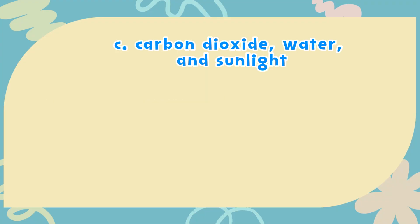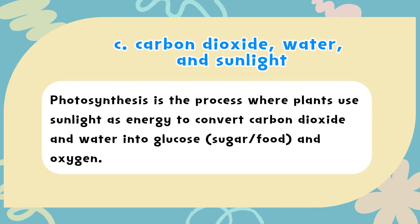The correct answer is C. Carbon Dioxide, Water and Sunlight. Photosynthesis is the process where plants use sunlight as energy to convert carbon dioxide and water into glucose — a sugary food — and oxygen.